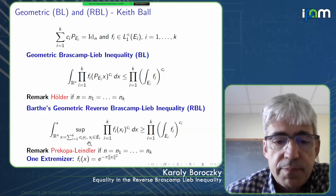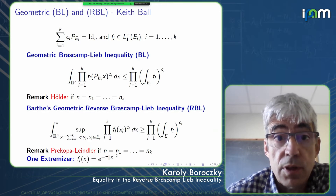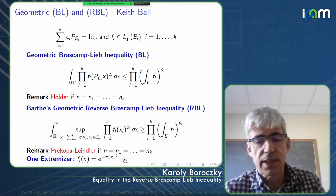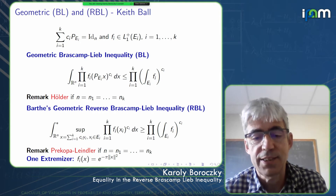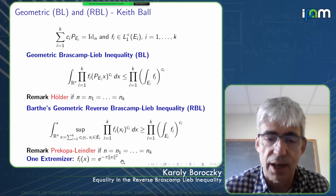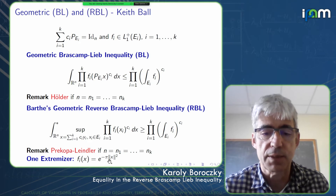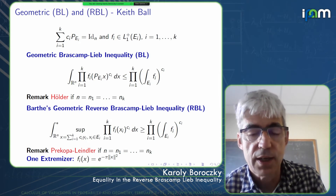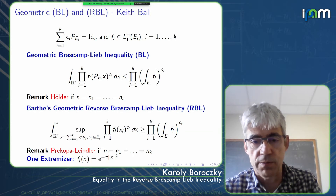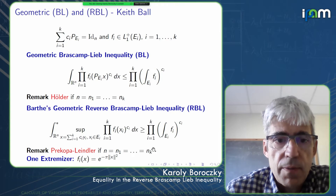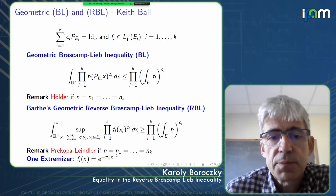A nice feature of the geometric Brascamp-Lieb inequality is that one obtains very clean extremizer functions. One possible choice is to use a Gaussian on each E_i — specifically, on each E_i consider the Gaussian probability density e^{-π‖x‖²}. This geometric form seems to be the right setup for understanding the extremizers.